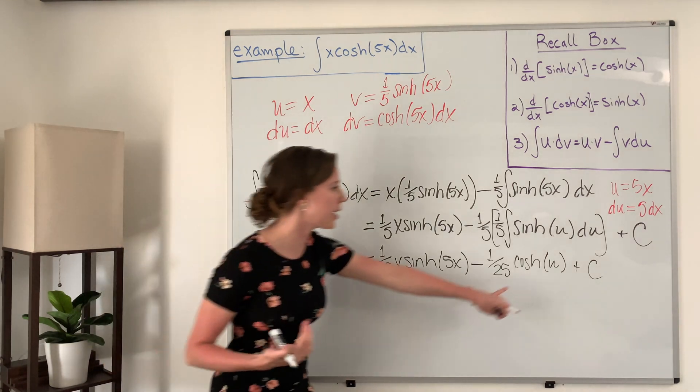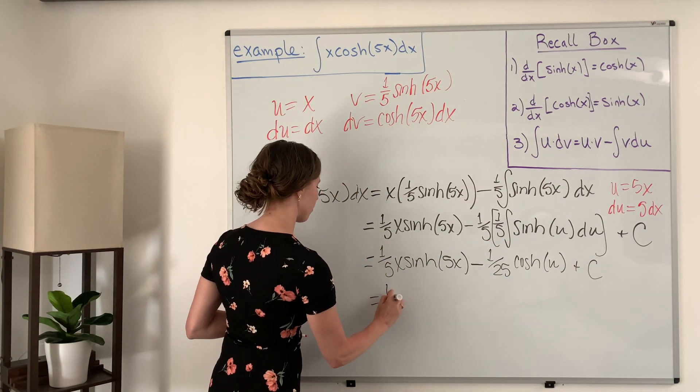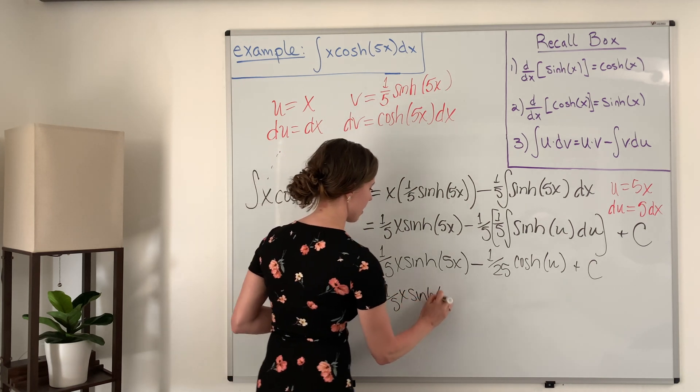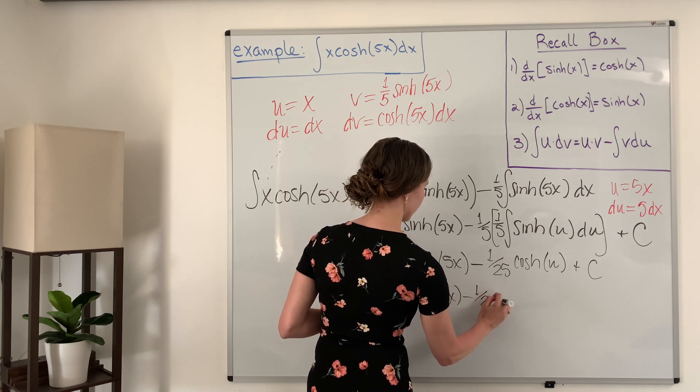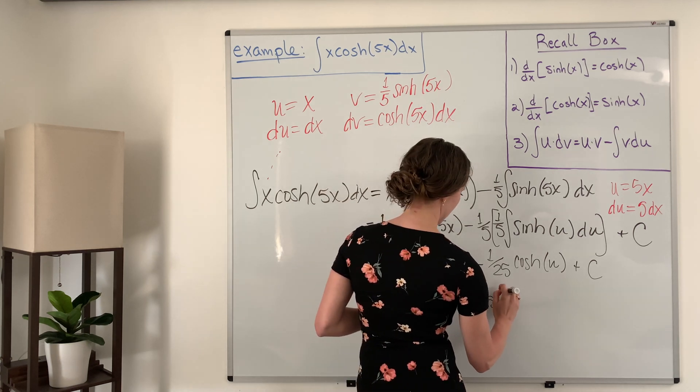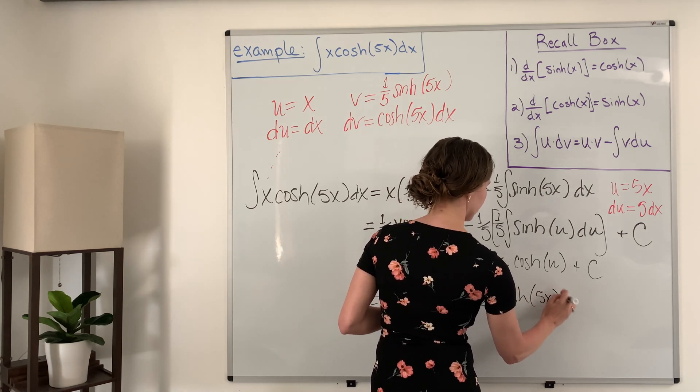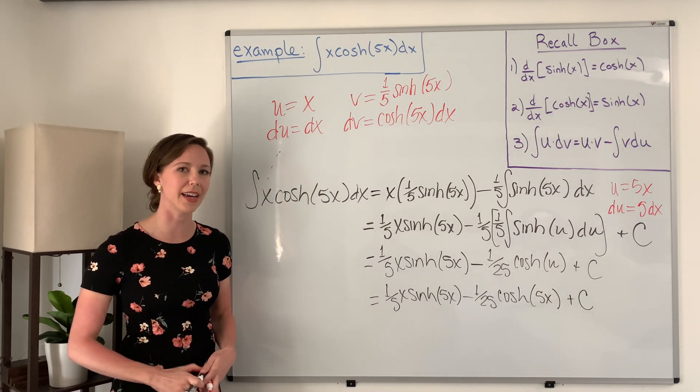And then to get our final answer, we want to plug in what our u was up there, and so we have one-fifth x hyperbolic sine of 5x minus one twenty-fifth hyperbolic cosine of 5x plus C, and then that will be our answer.